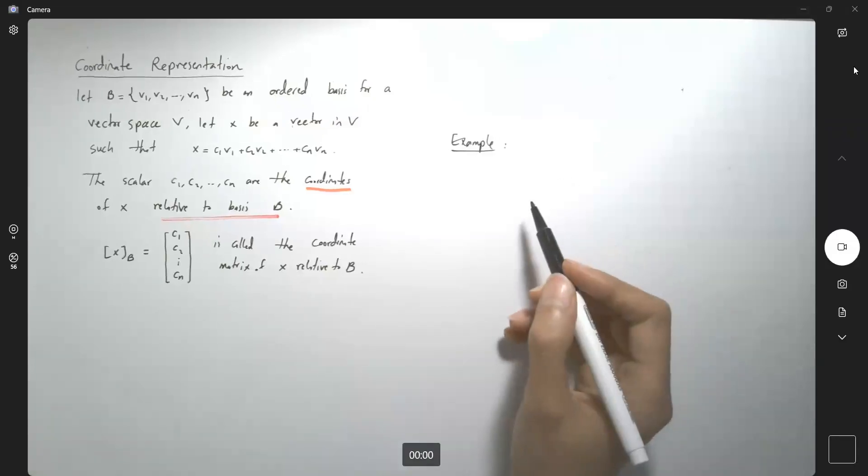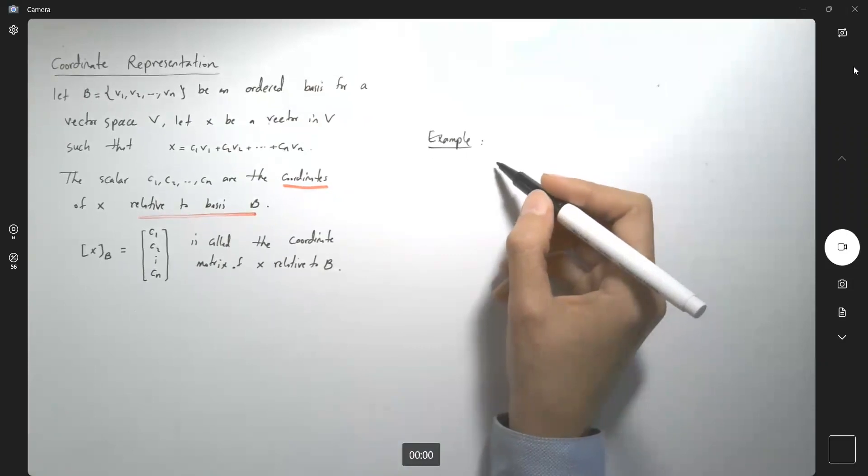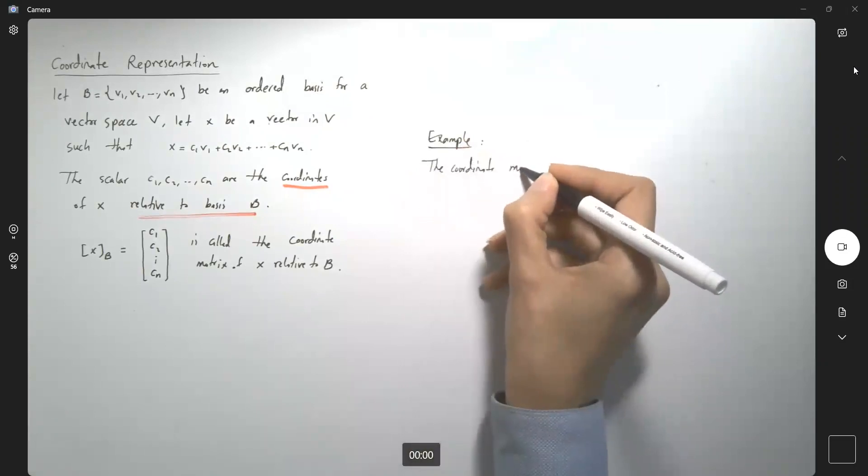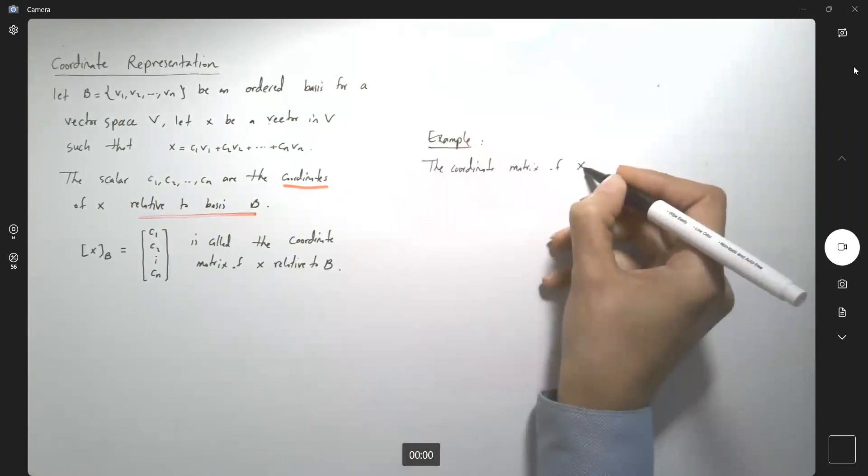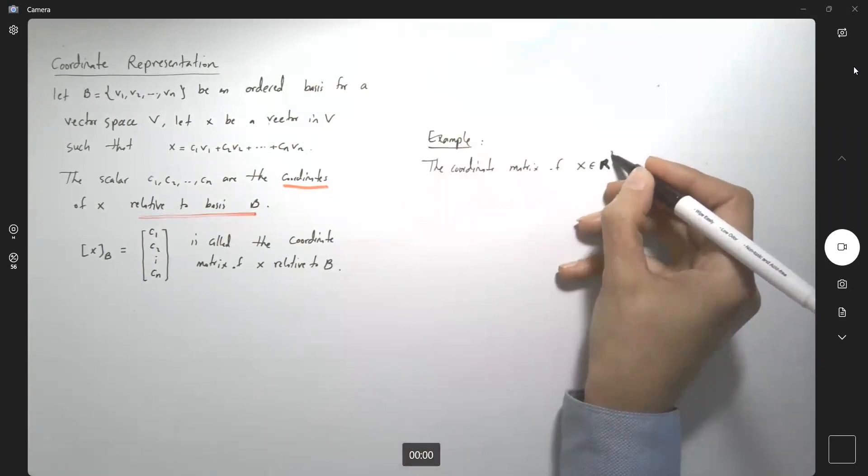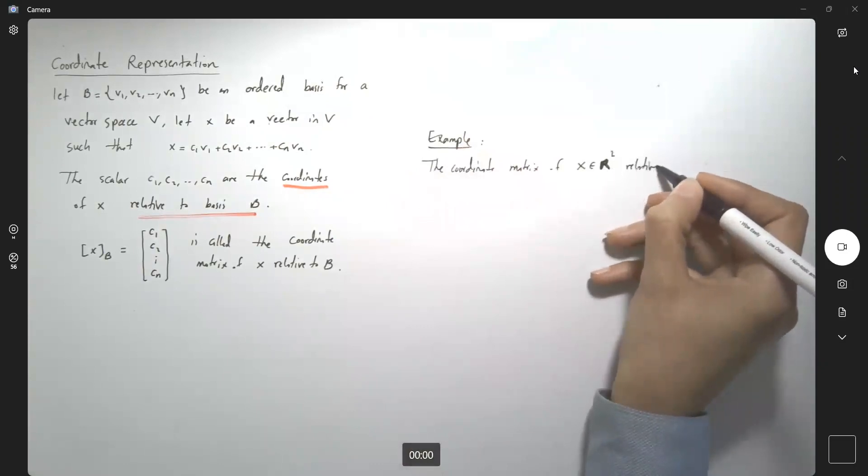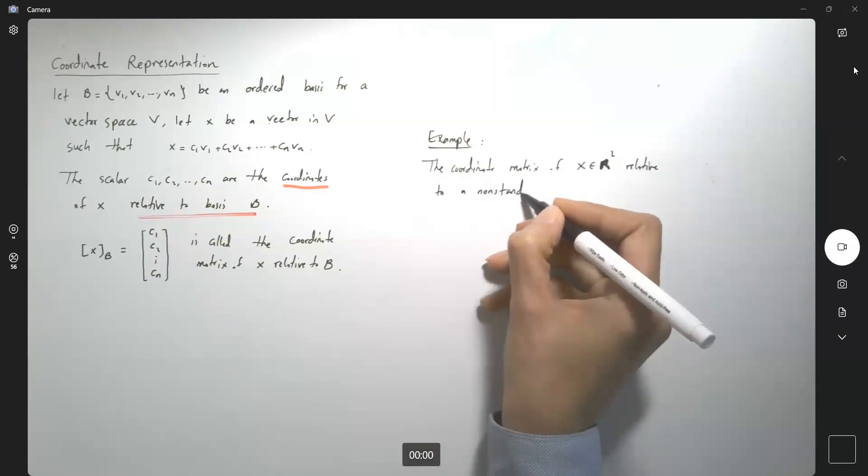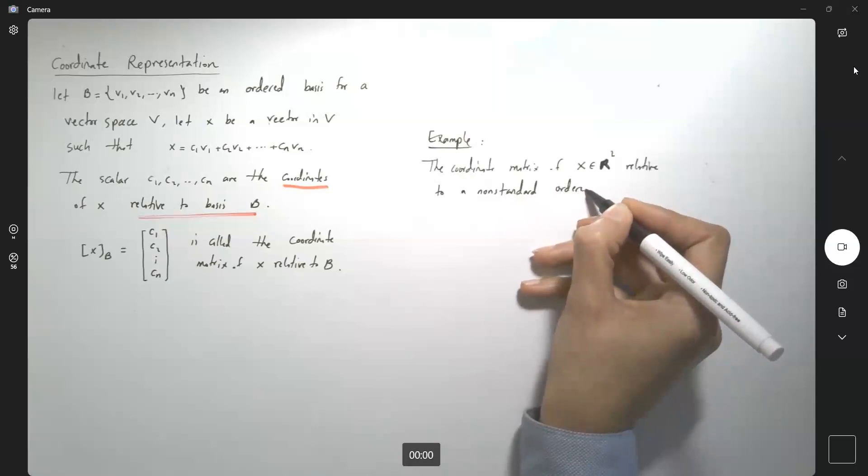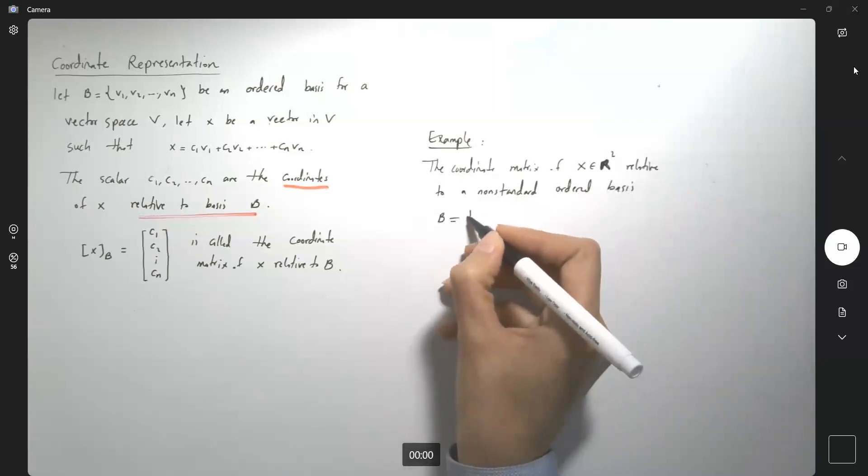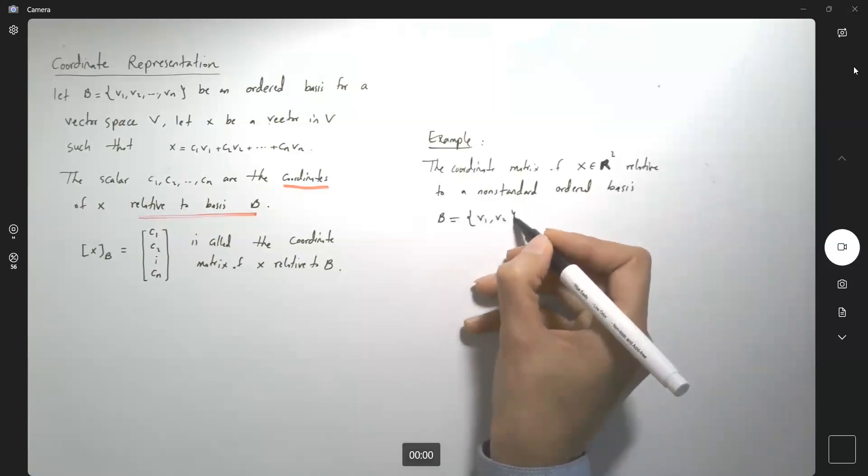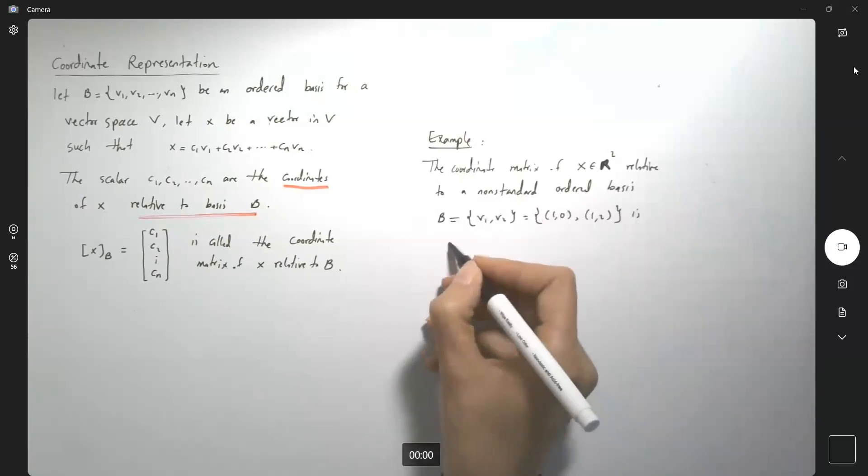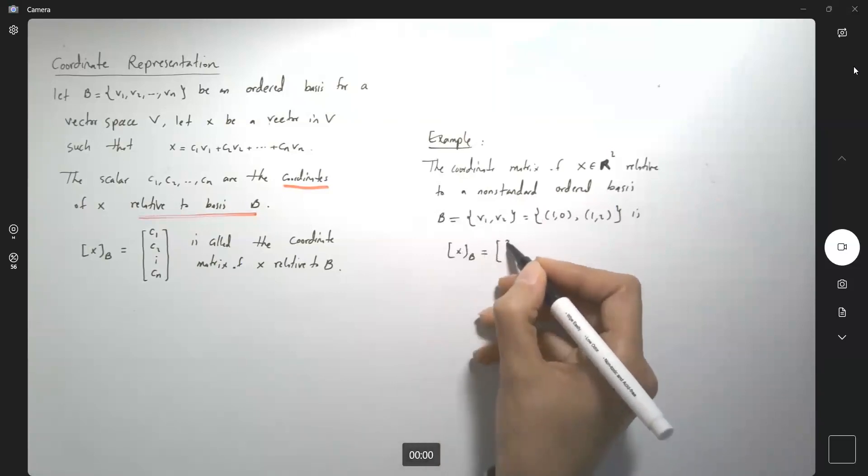Another example for you. So in this question we have the following information. It says the coordinate matrix of vector x in the plane relative to a non-standard ordered basis B, which is given to you as V1 and V2, which are these two vectors (1,0) and the other one is (1,2), is given as 3 and 2.